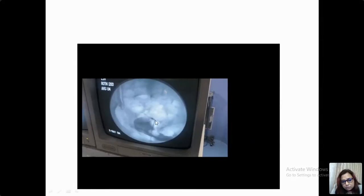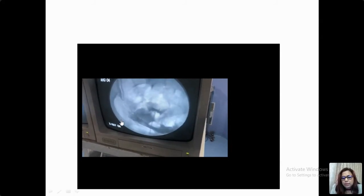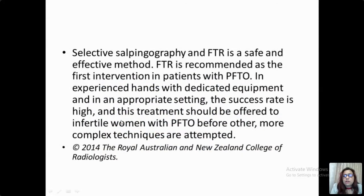This is a simple procedure for tubal obstruction. On the other side, the guidewire is inserted and the motility of the fallopian tube is seen — it is freely moving — followed by injection of contrast media. This is transcervical fluoroscopic guidewire-mediated fallopian tube recanalization (FTR). Selective salpingography and FTR is a safe and effective method. Fallopian tube recanalization is recommended as the first intervention in patients with proximal fallopian tube obstruction. In experienced hands with dedicated equipment and an appropriate setting, the success rate is high and should be offered to every woman with proximal fallopian tube obstruction before any other complex techniques are attempted.